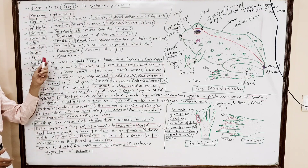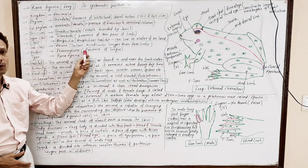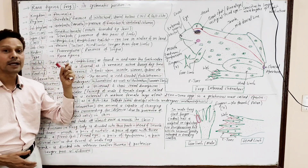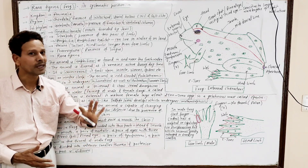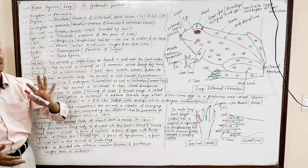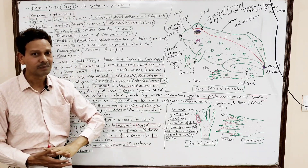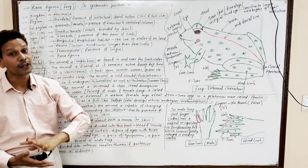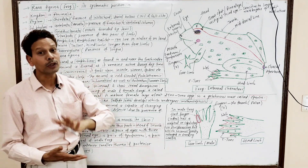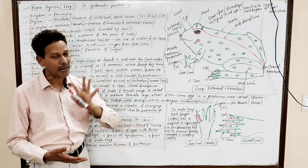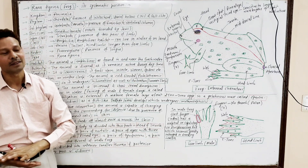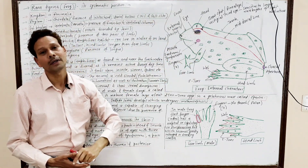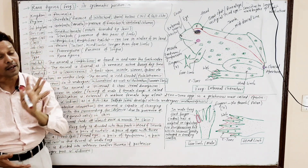Order: Phaneroglosa — presence of tongue. And the type is Rana Tigrina. In today's lecture, we are discussing the new type study of class Amphibia, having both life — terrestrial and aquatic — and the type study is frog, Rana Tigrina.